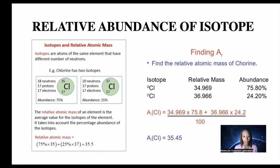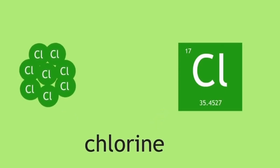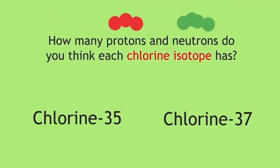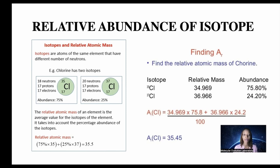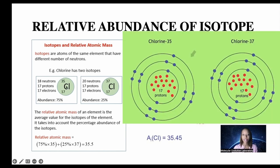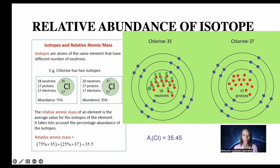Isotopes are atoms of the same element that have different numbers of neutrons. Chlorine, for example, has two isotopes: one with an atomic mass of 35 and one with an atomic mass of 37. The relative abundance of chlorine-35 is 75% and the relative abundance of chlorine-37 is 25%. The relative atomic mass of an element is the average value for its isotopes, taking into account the percentage abundance. In other words, 75% of chlorine atoms exist as chlorine-35 and 25% exist as chlorine-37.